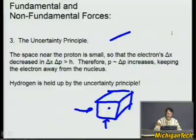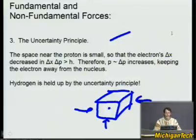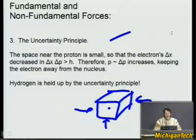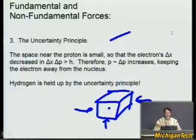But if you made the box smaller — pressing on all three axes — the electron would be trapped in the box, and you would know its delta x, delta y, and delta z even better. But according to the uncertainty principle, delta p must be larger. So the smaller the box, the larger the uncertainty in p, and so the more pressure it can bring about. The uncertainty principle can generate a force, and this force balances the electrostatic force between the proton and the electron, creating the bound state of a hydrogen atom. Hydrogen is held up by the uncertainty principle.